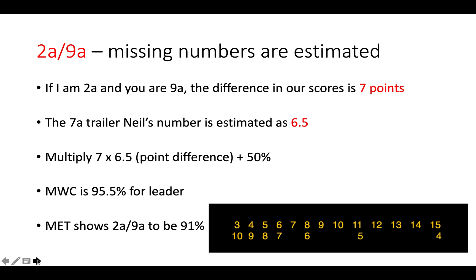You can see on the bottom row that some numbers are missing. In those cases, we have to make a sensible estimation. If I am two away and you are nine away, the difference in our scores is seven. For a seven away trailer, Neil's number we can estimate as around 6.5 because it's between seven and six. We multiply seven by 6.5, plus 50%, and that gives match winning chances of 95.5% for the leader. The match equity table shows it to be 91%, so it's off by about 4.5% — but that's because we are making an estimation. When the Neil's number is given exactly, as we saw before, it's very accurate.